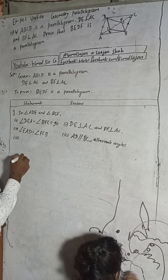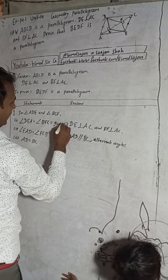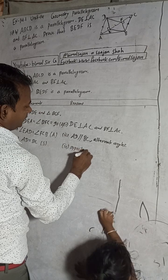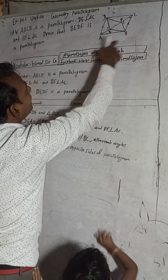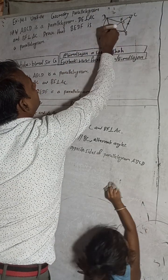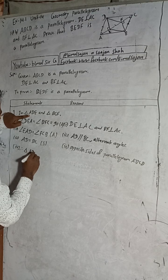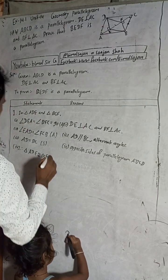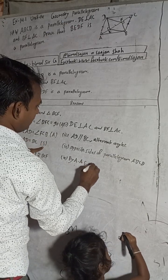Number 3: AD is equal to BC. The reason is that opposite sides of parallelogram ABCD are equal. This is our angle, this is also an angle, and this is our side. Therefore triangle ADE is congruent to triangle BCF by the angle-angle-side axiom.